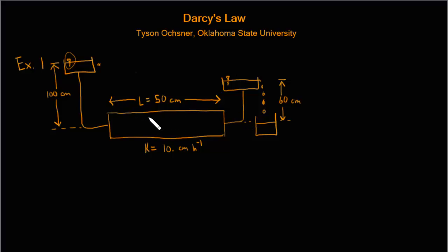The length of the soil column in this case is 50 centimeters and the hydraulic conductivity is 10 centimeters per hour. Now you'll recall that for Darcy's law we have the flux Q is equal to the hydraulic conductivity multiplied by the hydraulic gradient which can be written as the difference in total water potential divided by the length of the column.